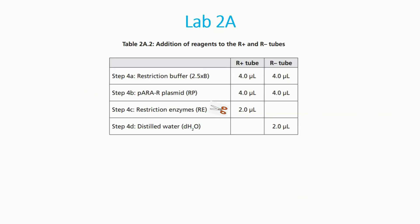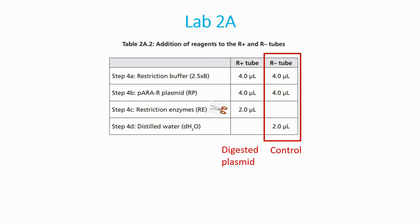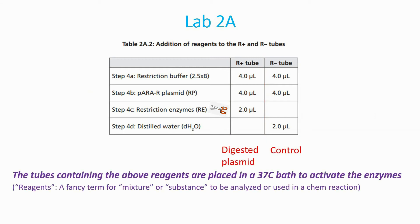For Lab 2A, we have two sets of samples: one with the PARA-R plasmid mixed with restriction enzymes, labeled R+, and another labeled R-, which contains no restriction enzymes and is instead mixed with water. The R+ tube contains our digested plasmid, while R- acts as our control sample to help us see if the restriction enzymes had an effect. The reagents are placed in a 37-degree bath to activate the enzymes, then placed in a freezer for preservation and readiness for Lab 4A.